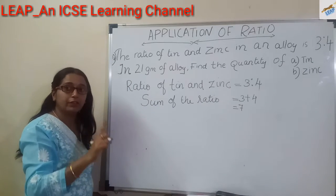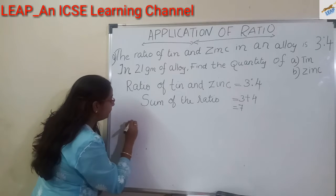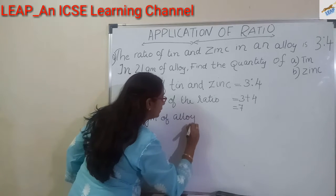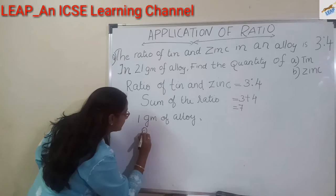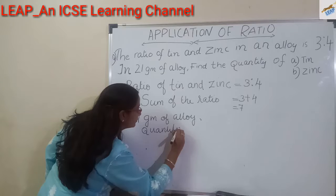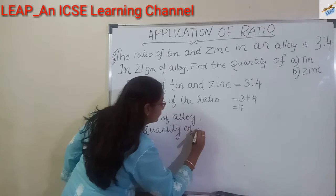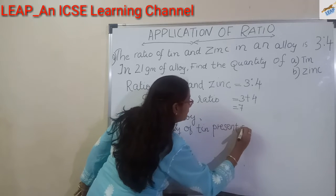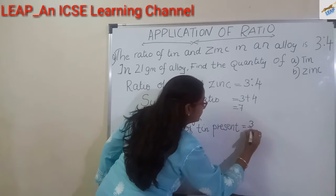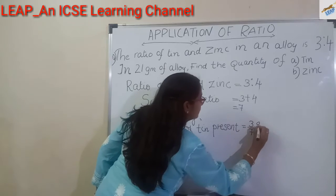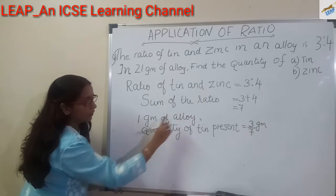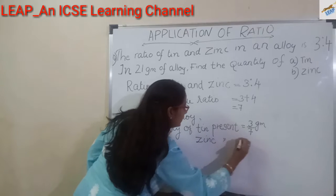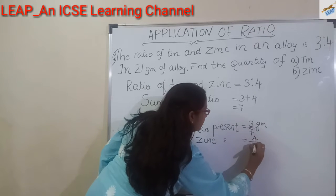In 1 gram of alloy, what is the quantity of tin present? In 1 gram of alloy, quantity of tin present is equal to 3 by 7. In 1 gram of alloy, quantity of zinc present is equal to 4 by 7 gram.